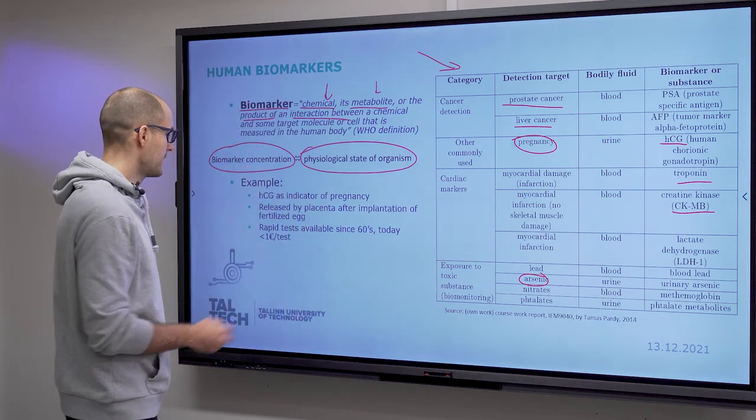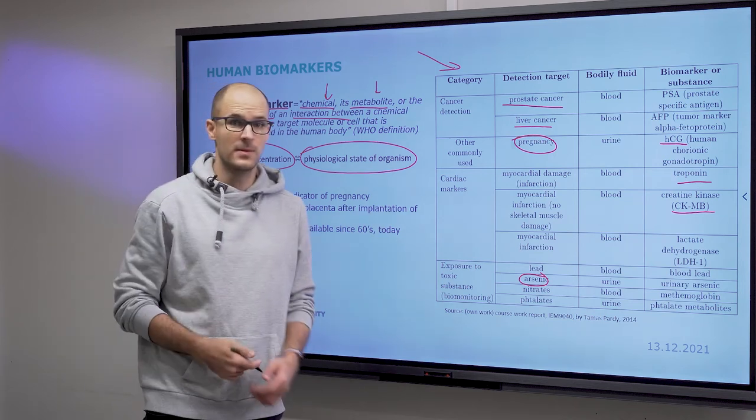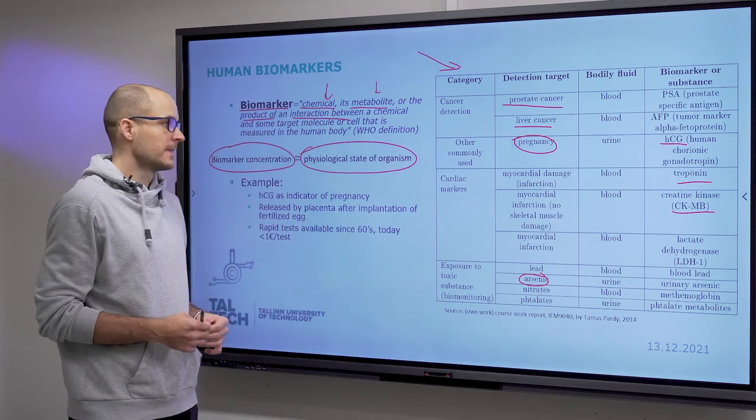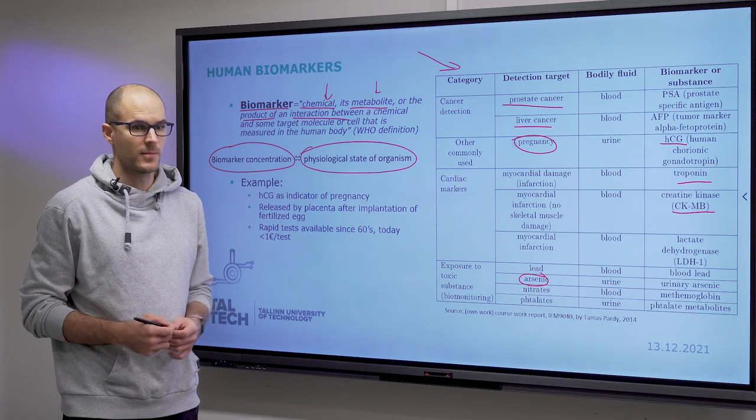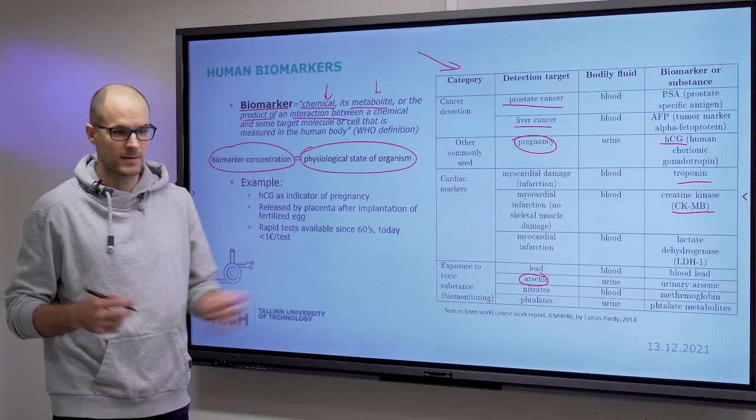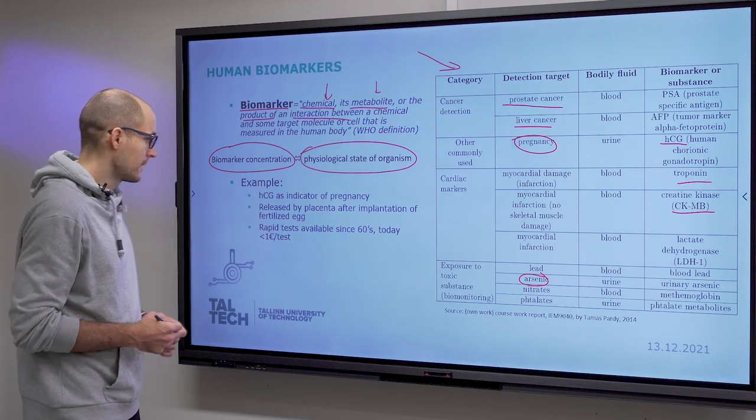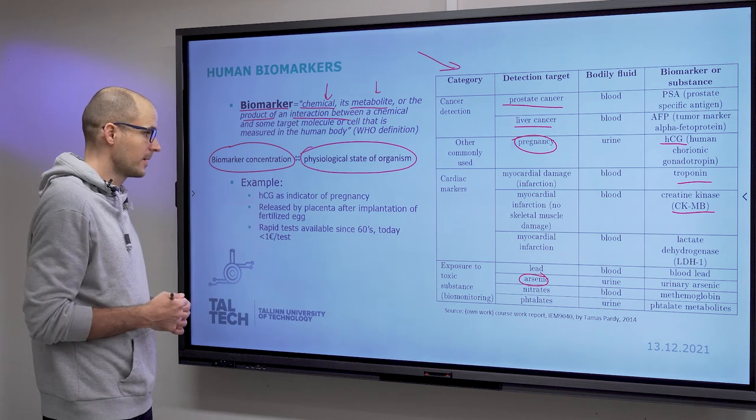So yeah, these things. And pregnancy test is something that is well understood, but I can also talk about something else. Glucometers—they also detect something that is a biomarker for our body. They detect the level of sugar in your blood, the level of glucose in your blood. In that case, that is also a biomarker.